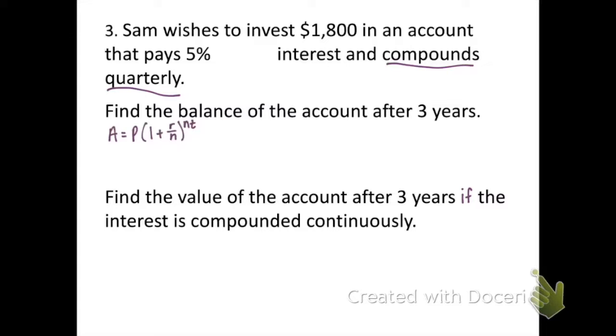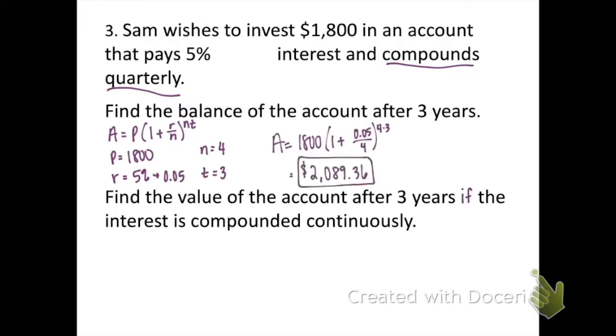The first thing we're going to do is figure out what P, R, N, and T values are. It says that Sam wishes to invest $1,800, so that's going to be the starting amount, her principal, $1,800. We have interest of 5% per year, so 5% becomes 0.05. It says compound quarterly, so N is going to be 4 and T is 3. We're going to plug each of those values into the equation and then put that in our calculator and we get $2,089.36 for the amount in the account after three years.